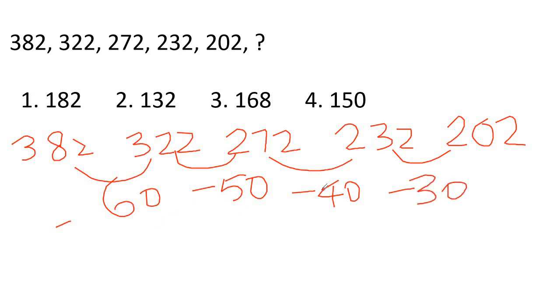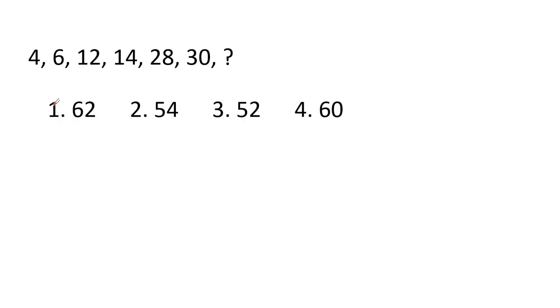The differences are 60, 50, 40, 30 — decreasing by 10 each time. So the next difference should be 20. Therefore 202 minus 20 gives us 182 as the next term.